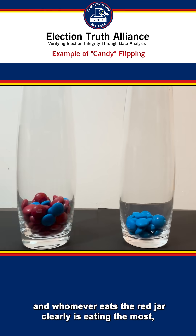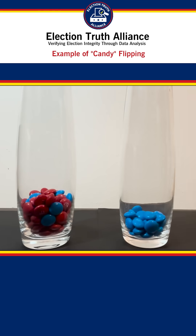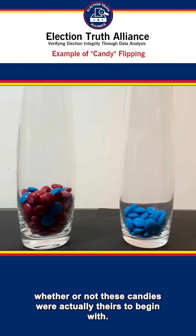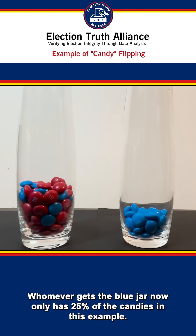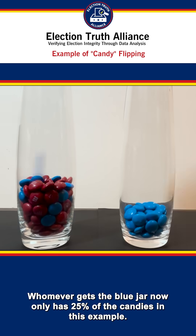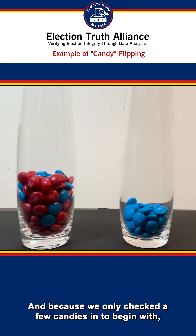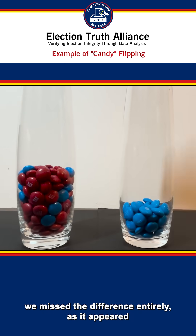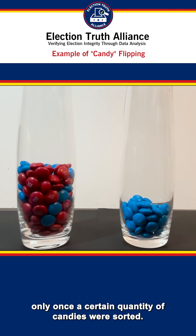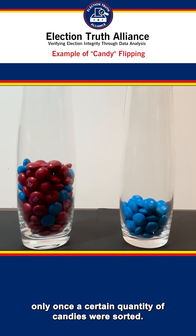Whoever eats the red jar clearly is eating the most, whether or not these candies were actually theirs to begin with. And it's not a slight difference, either. Whoever gets the blue jar now only has 25% of the candies in this example. And because we only checked a few candies in to begin with, we missed the difference entirely, as it appeared only once a certain quantity of candies were sorted.